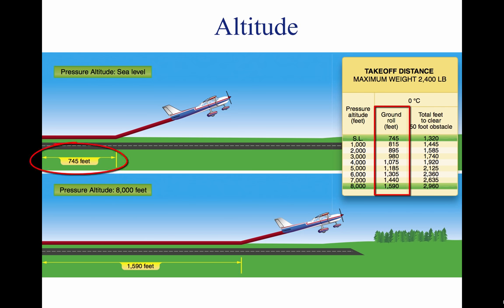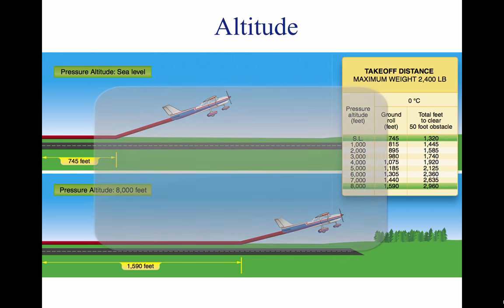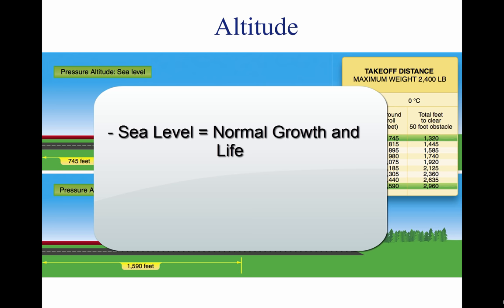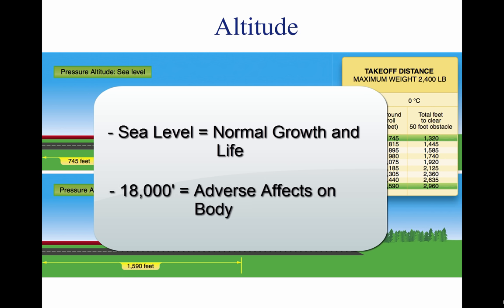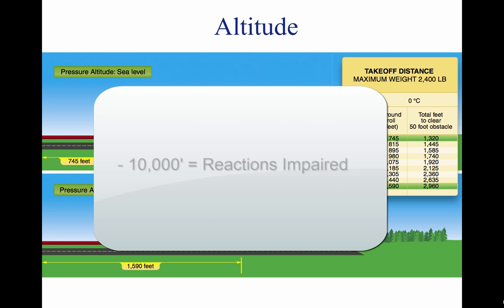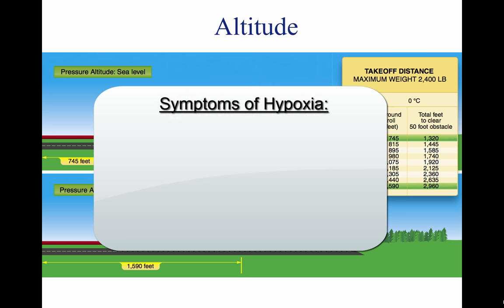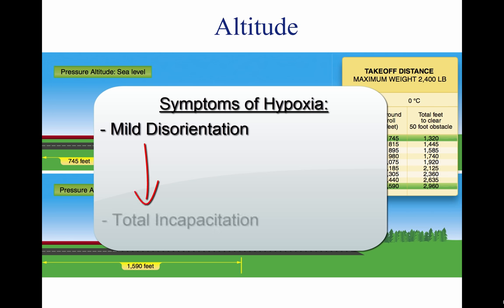An aircraft that requires 745 feet of ground run at sea level requires more than double that at a pressure altitude of 8,000 feet. At sea level, atmospheric pressure is great enough to support normal growth activity and life. By 18,000 feet, the partial pressure of oxygen is reduced and adversely affects the normal activities and functions of the human body. The reactions of the average person become impaired at an altitude of about 10,000 feet, but for some people impairment can occur at an altitude as low as 5,000 feet. The physiological reactions to hypoxia, or oxygen deprivation, are insidious and affect people in different ways, ranging from mild disorientation to total incapacitation depending on body tolerance and altitude. Supplemental oxygen or cabin pressurization systems help pilots fly at higher altitudes and overcome the effects of oxygen deprivation.